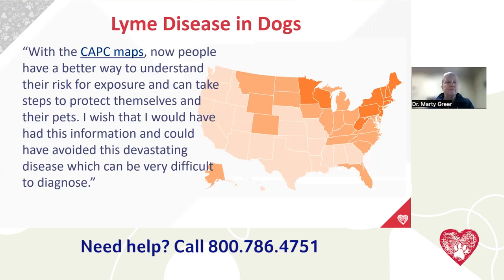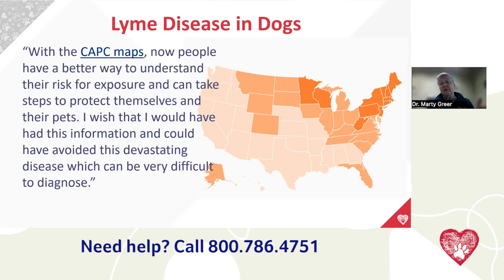The CAPC Vet website — capcvet.org — is a really great resource. This map shows the distribution of Lyme disease. They track where Lyme disease shows up in dogs, which helps predict where it will appear in people as well. On the CAPC Vet website you can look up heartworm, fleas, ticks, and Lyme disease, select the species, and click down to the county level to see what's going on in your neighborhood.